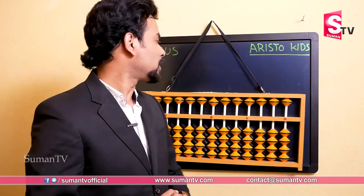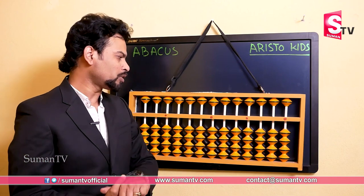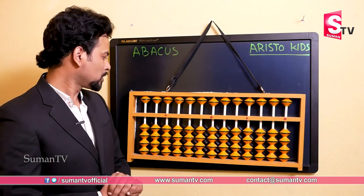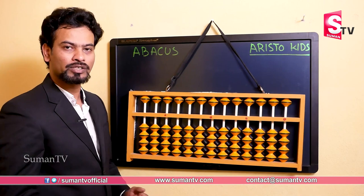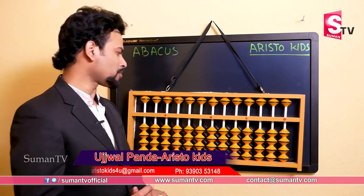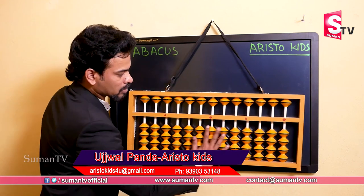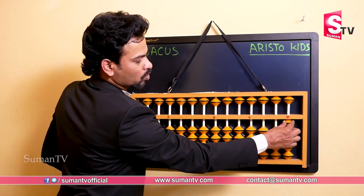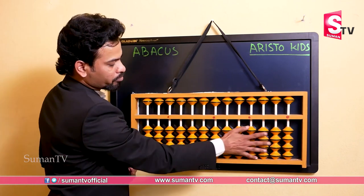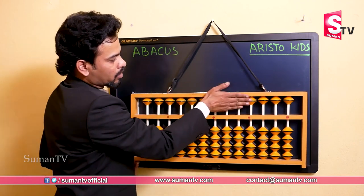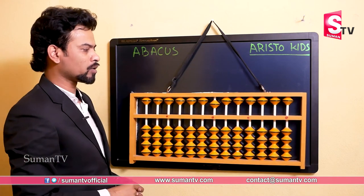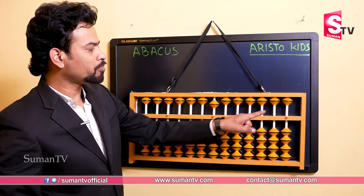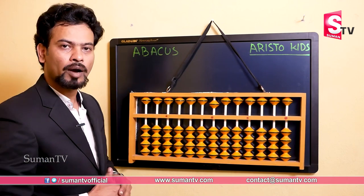Welcome to our next episode of learning the basics of abacus. In this episode we will learn about different parts of abacus and the working system of abacus. Here you can see an instrument called abacus. In this abacus we have different parts. You can see there are some yellow color circles — these are called beads. These beads can go up and go down. The beads towards the lower side are called lower beads and the beads towards the upper side are called upper beads.